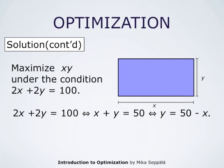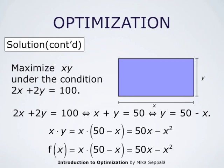We write the expression to be optimized as a function of one variable only using the perimeter condition. Since 2X + 2Y = 100, we get X + Y = 50, that is Y = 50 − X. Therefore, the area X times Y can be written as X times (50 − X), that is 50X − X². The function for which we now have to find the maximum value is F(X) = X(50 − X) = 50X − X².